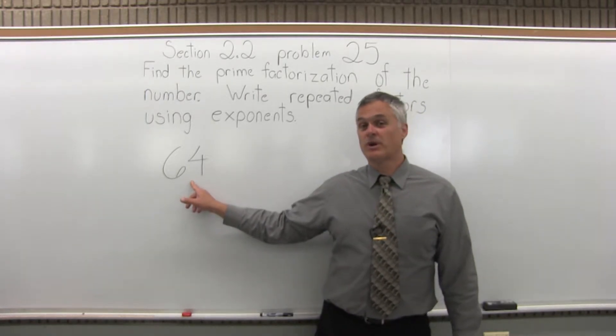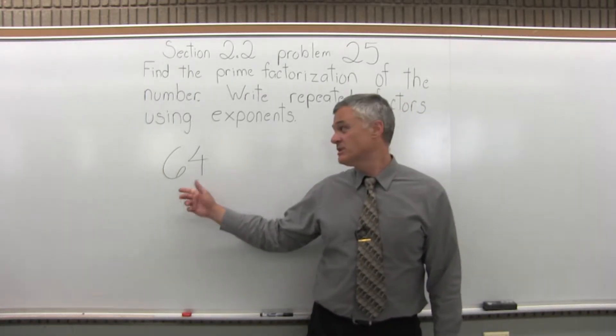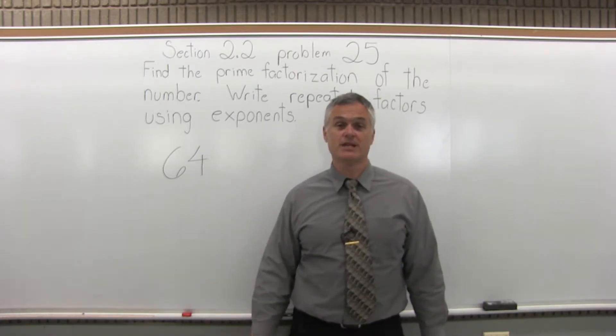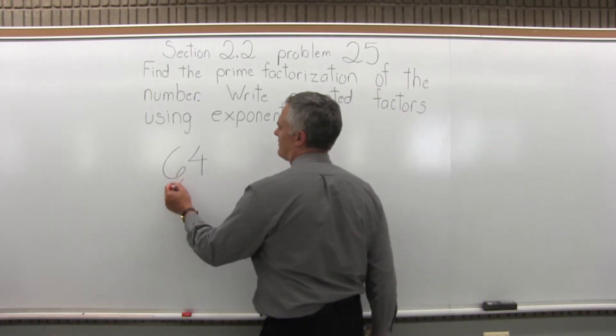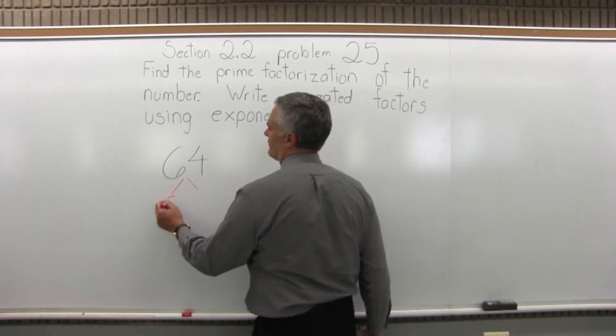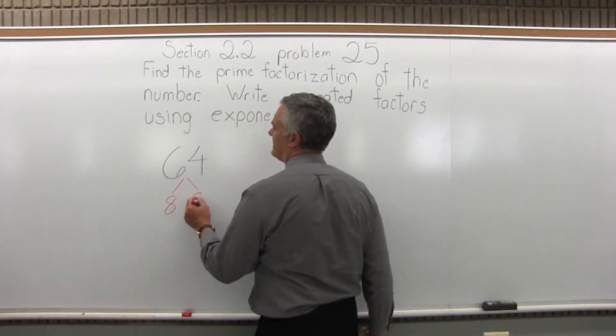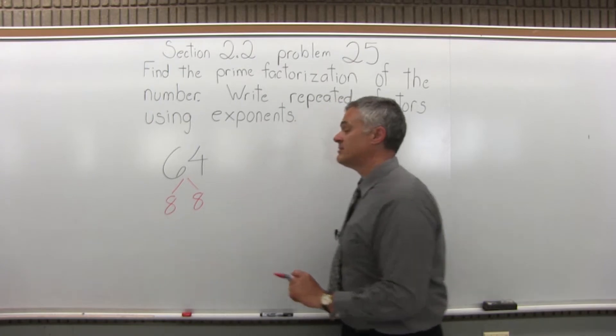So we want to find what primes multiply to make 64. Let's start by breaking the 64 down to any two numbers that multiply to make 64. There are a lot of options to start off with, but the first one that I see is 8 times 8.